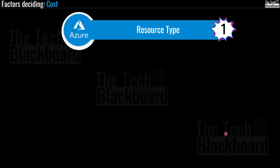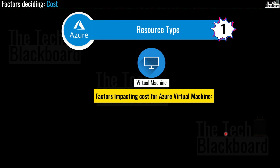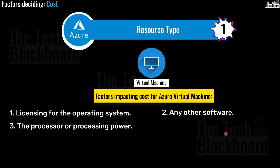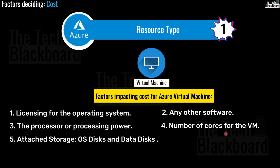Let's take the example of a virtual machine. You have to consider the licensing cost of the operating system and other software, the processor, and the number of cores. There are also other factors such as attached storage or network interface. Just like with storage, provisioning the same virtual machine in different regions may result in different costs.